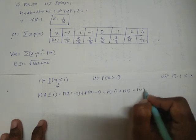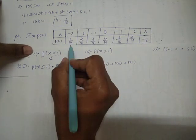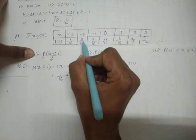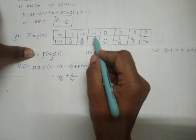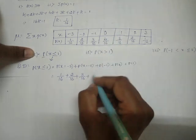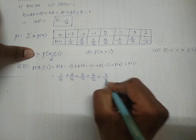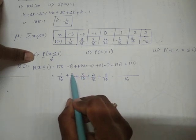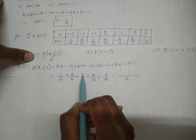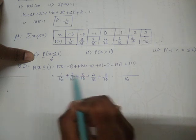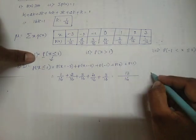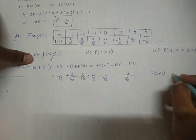Substituting the values: 1/16 + 2/16 + 3/16 + 4/16 + 3/16. The common denominator is 16. Adding the numerators: 1 + 2 = 3, 3 + 3 = 6, 6 + 4 = 10, 10 + 3 = 13. Therefore P(X ≤ 1) = 13/16.